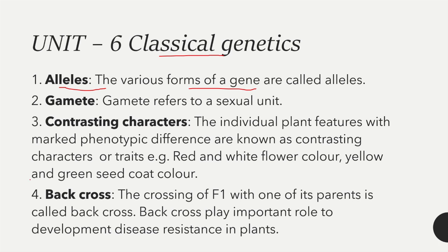The second term is gamete — a gamete refers to a sexual unit; the haploid set of chromosomes is also called a gamete. Next is contrasting character — individual plant features with marked phenotypic differences are known as contrasting characters or traits, for example red and white flower color, yellow and green seed coat color, plant height, flower position, and flower color.